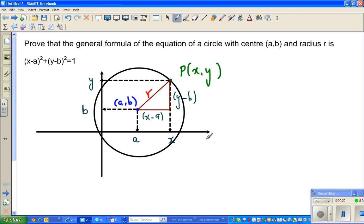So what I've done is this is my x-axis and this is my y-axis. I've drawn a circle with center (a,b). So if this is the center, this point would be a on the x-axis and this point would be b on the y-axis.